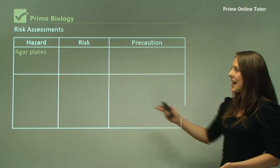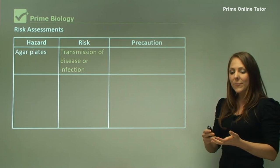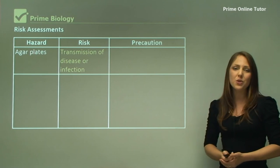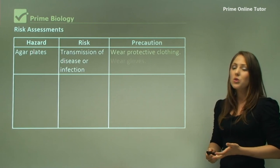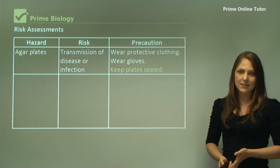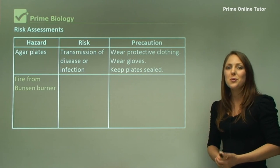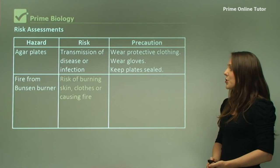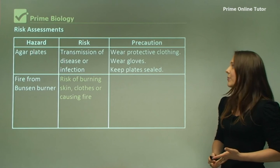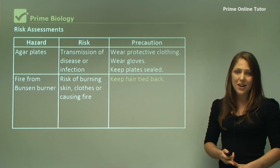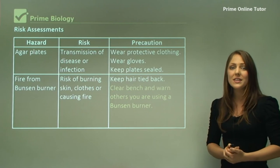A hazard might be agar plates because they have bacteria and fungi on them with a risk of transmission of disease. The precaution might be to wear gloves or to keep the plate sealed and wear protective clothing. Fire from a Bunsen burner is also a huge hazard with a risk of burning your skin, clothing, or causing fire in the laboratory. The precaution might be to tie your hair back, keep your bench clear, warn others that there's a Bunsen burner on nearby, and never leave it burning unattended.